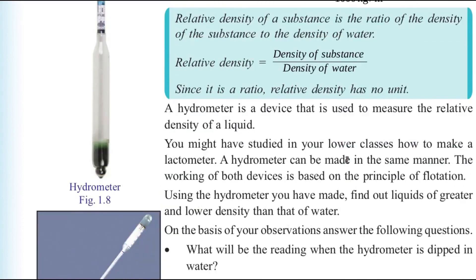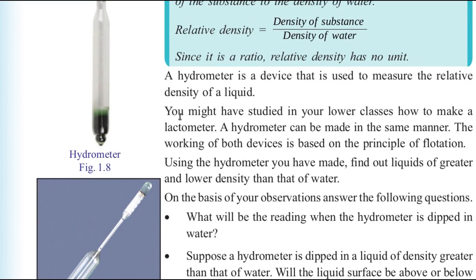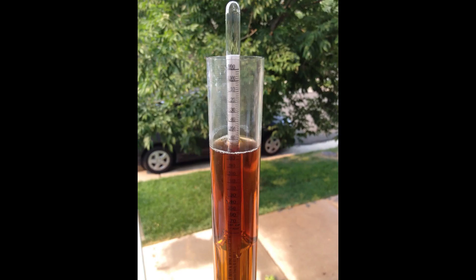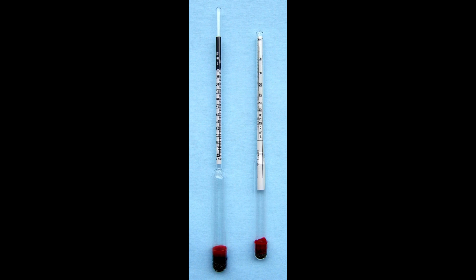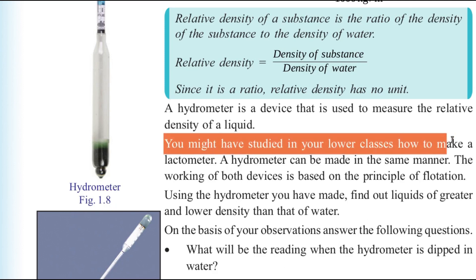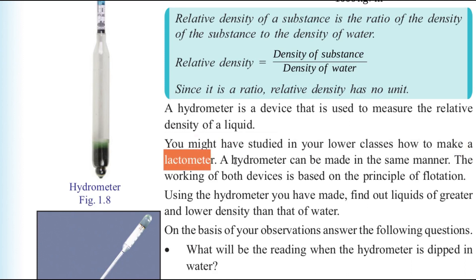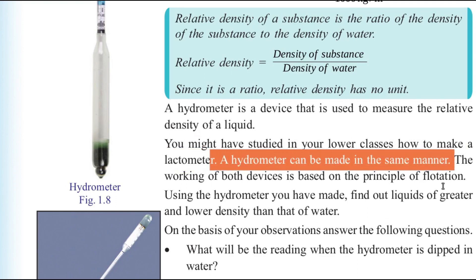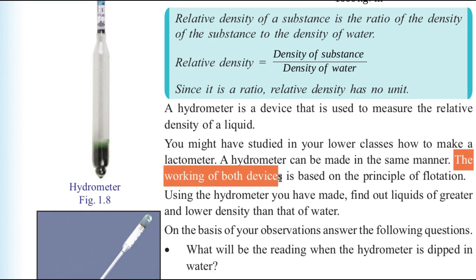There are certain devices used to measure the relative density of a liquid. This device is called a hydrometer. A hydrometer is a device used to measure the relative density of a liquid. In Figure 1.8, a picture of a hydrometer is shown with markings; by dipping it into the liquid whose density is to be measured, we can easily find the relative density. A lactometer, used to check the purity of milk, is also a type of hydrometer.